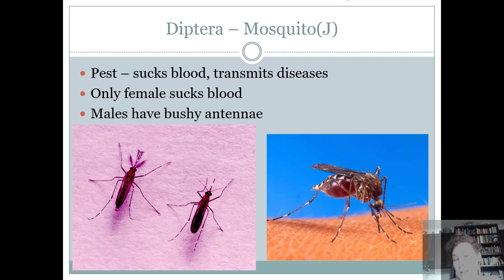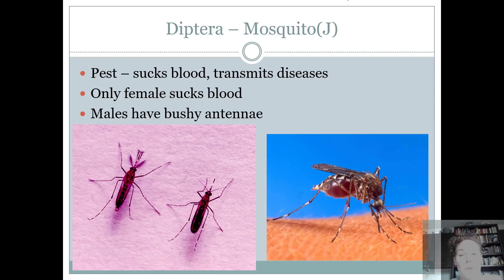And then we've got mosquitoes. Everybody should be able to identify a mosquito — they're pretty easy. They're obviously pests. They suck our blood, they annoy us, but they transmit diseases and that's what makes them a big issue. I would know that only the female sucks the blood, and the reason is because she needs the blood for protein in order to make eggs.